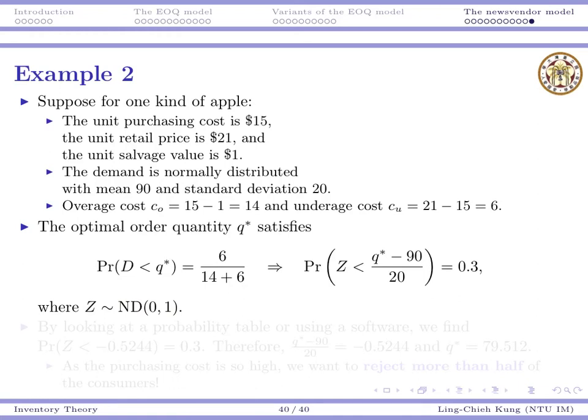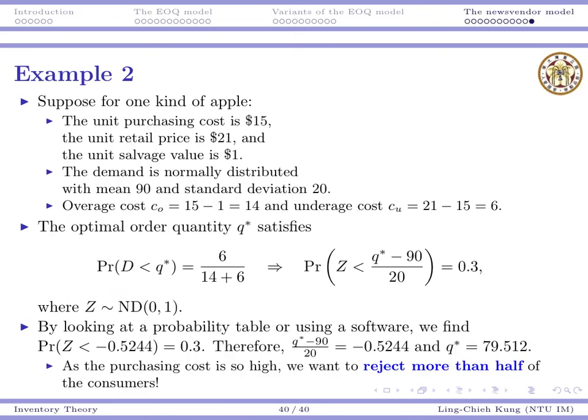So the optimal order quantity should satisfy this particular expression. The probability for D to be smaller than Q should equal to this particular ratio. And then, if we want to solve it, we may do a transformation or standardization for the normal random variable. We may take the mean and standard deviation. And within this probability function, we can subtract 90 from each side and then divide each side by 20.